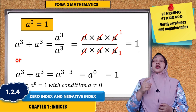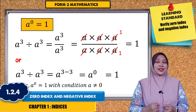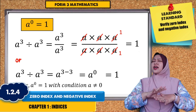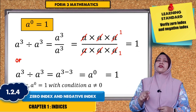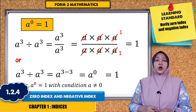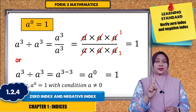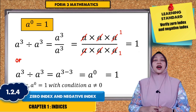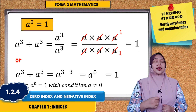A to the power of 0 is equal to 1, with the condition that A is not 0. You just need to understand that any number raised to the power of 0 will give 1 as the answer.